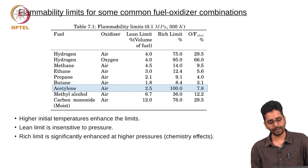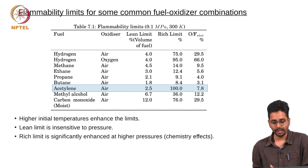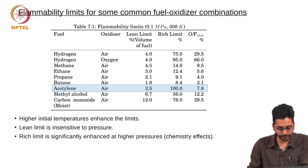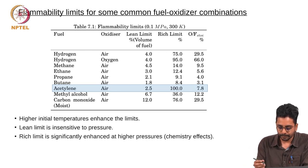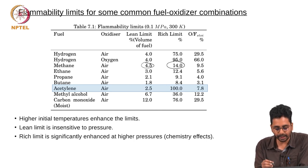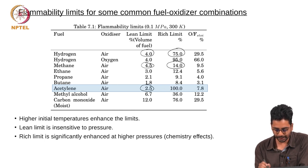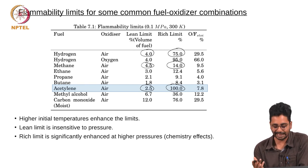In this table, flammability limits are shown for some common fuel-oxidizer combinations at an initial pressure of 1 bar and an initial temperature of 300 kelvins. For methane, the lean limit is about 4.5 percent and the rich limit is 14 percent. Hydrogen has wide flammability limits: lean limit is 4 percent, rich limit is 75 percent. An interesting fuel is acetylene, with a lean limit of about 2.5 percent and a rich limit of 100 percent.